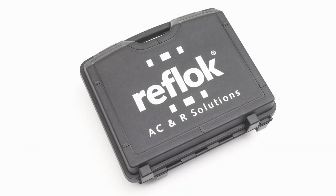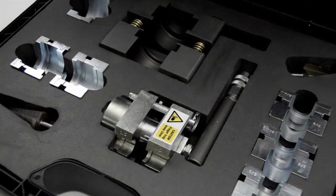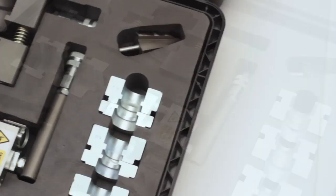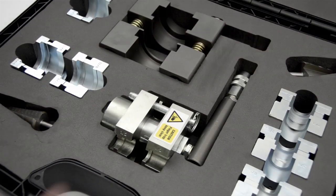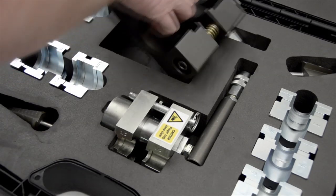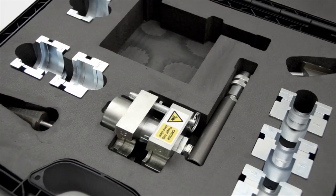To make a Reflock BS box connection, firstly select the appropriate tool to make the joint on the BS box. Select the rotary tool for 3/8 of an inch and 1/2 inch, or the linear tool for 5/8 of an inch and above. In this case, we're making a 5/8 of an inch joint, so we choose the linear tool.